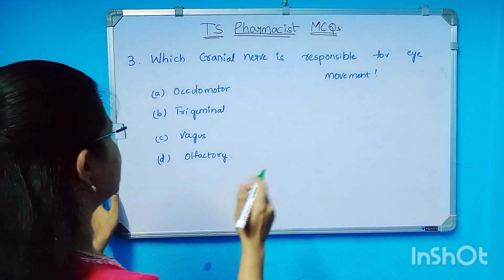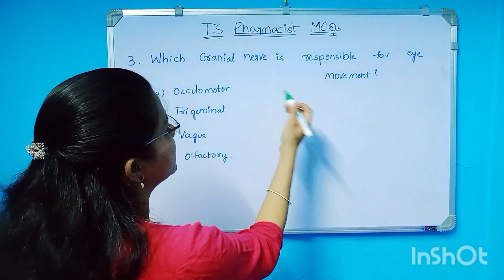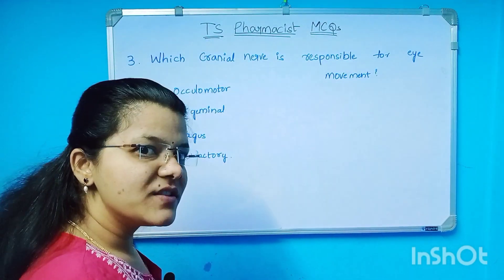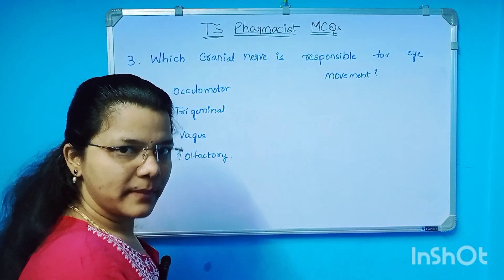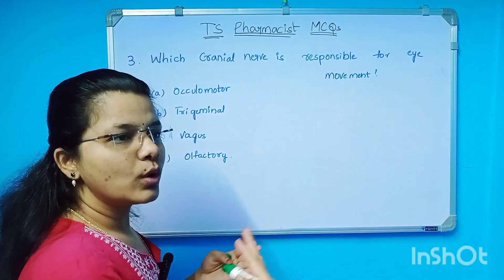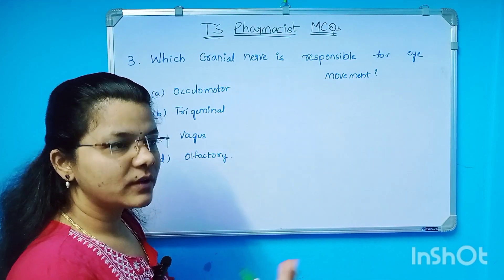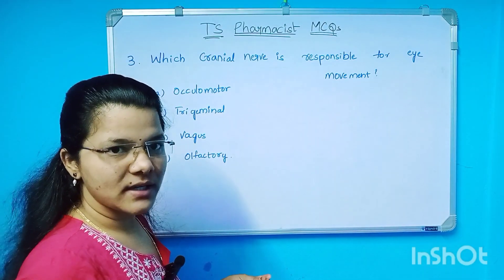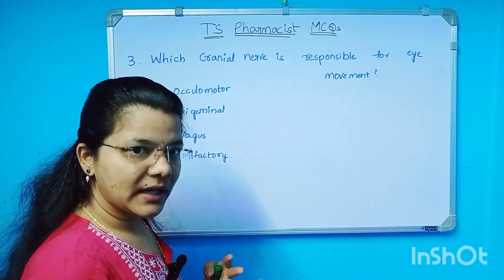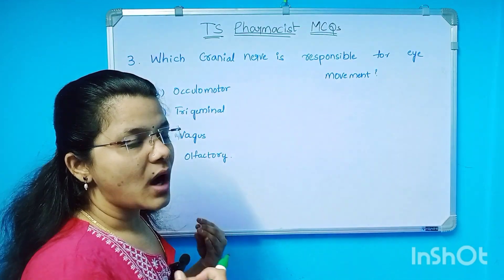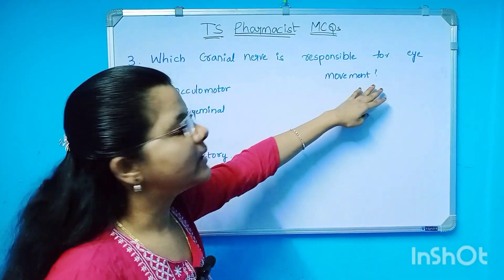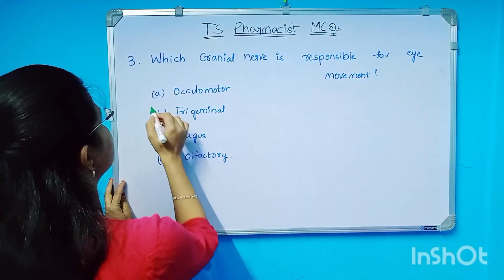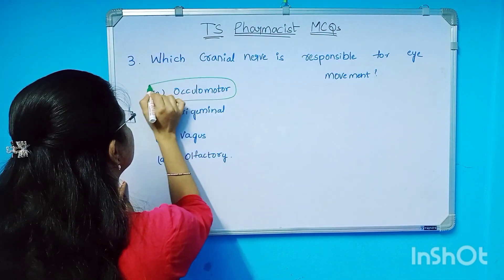Here the answer is: the cranial nerve responsible for eye movement is the oculomotor cranial nerve. There are 12 pairs of cranial nerves, and one cranial nerve is responsible for one activity — one sensory organ or other organ has one cranial nerve. So the answer is oculomotor cranial nerve.